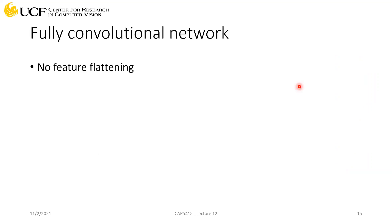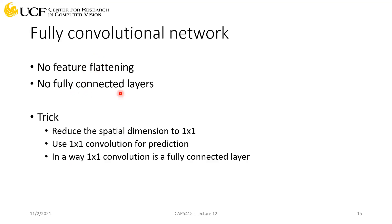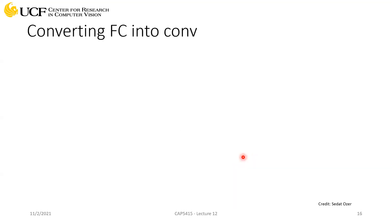Fully convolutional networks solve this: no feature flattening and no fully connected layers. The trick is to reduce your spatial dimension to 1x1 using pooling or convolutions, and then use a 1x1 convolution on top to make predictions. A 1x1 convolution is functionally equivalent to a fully connected layer: it computes a linear combination of all depth values, which is exactly what a fully connected layer does. So functionality-wise, they are not very different.